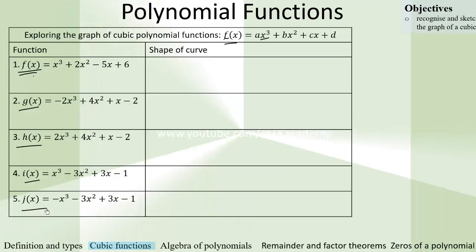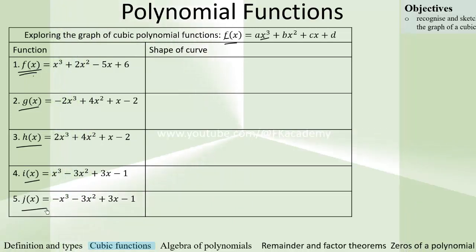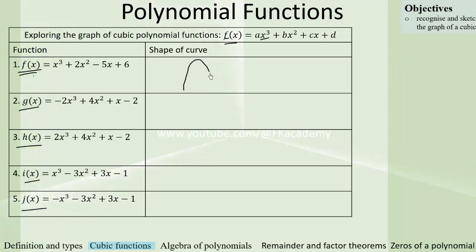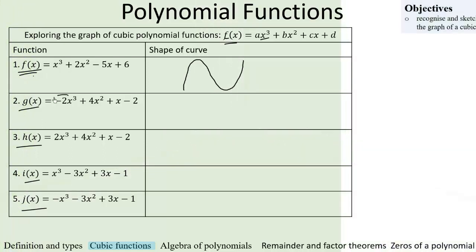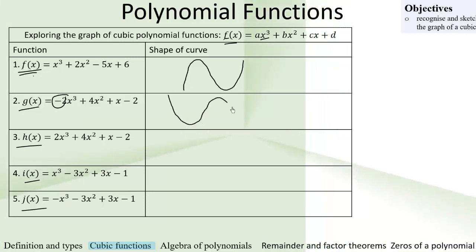You notice that in general, when the value of a is greater than zero, the shape starts from below the x-axis, goes up, comes down, goes up again. And if the value of a is less than zero, or if it is negative, it starts from up then goes like that.